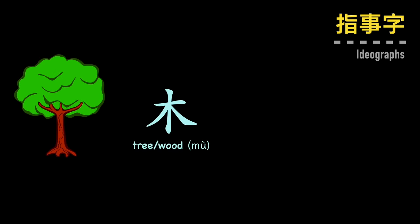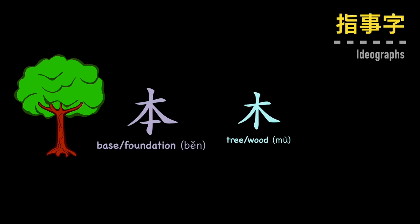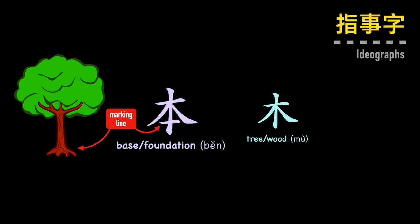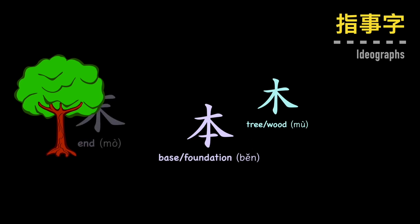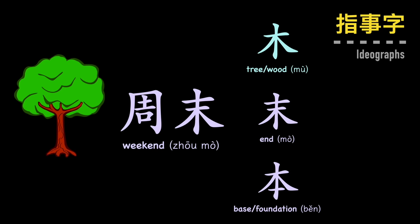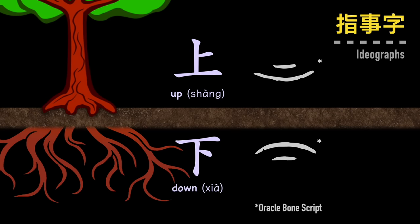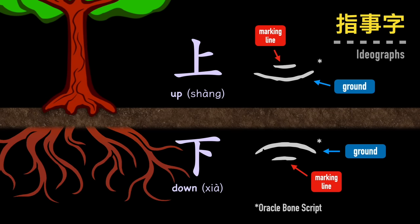Ideographs are like a step up from pictographs and visually represent a complex or abstract idea with a mark. For example, we can start with the character mu, which means wood, and visually represents a tree. If we add a line to the bottom, it becomes ben, which means stump, or base or foundation in modern Chinese. Add a line on top, and it becomes mo, which represented the top of trees in ancient Chinese, and means end in modern Chinese — like in the word zhou mo, meaning weekend. The characters for up and down were originally written like this, and also fall in this category.